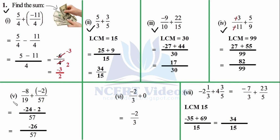Fifth part: −8/19 + (−2/57). We will do this in mind — plus minus is minus. Taking the LCM: try 57 ÷ 19; yes, 19 × 3 = 57. So LCM = 57. Then (57/19) × 8 = 24 (with minus sign), and 1 × (−2) = −2. Same signs, so we add: −24 + (−2) = −26. Answer: −26/57.